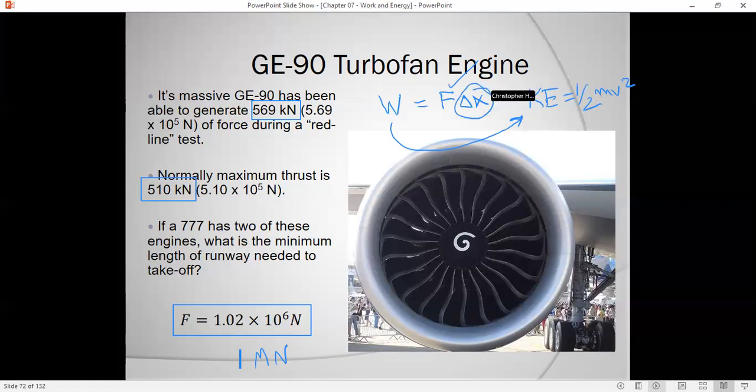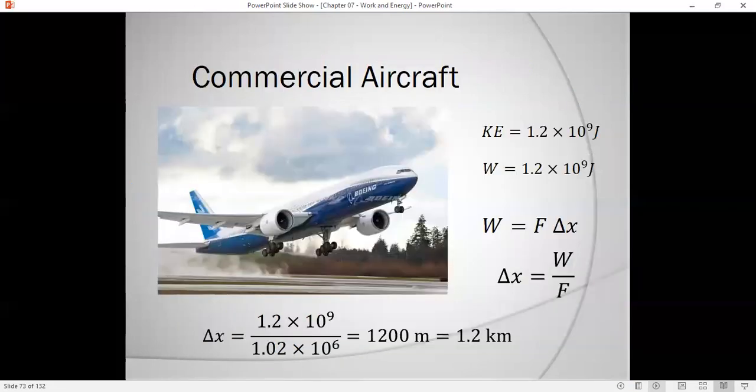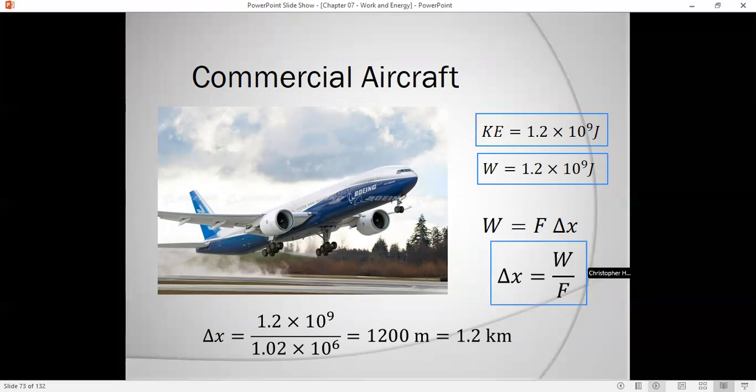All this kinetic energy is coming from the work, so the work has to also be 1.2 billion joules. How much runway do I need to take off? Let me do that calculation for this jet assuming that we can get to this maximum thrust of 510 kilonewtons. Once again, on takeoff this jet has about 1.2 times 10 to the 9 joules of kinetic energy that is added through work from the force of the engines.